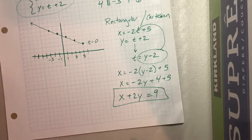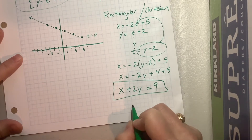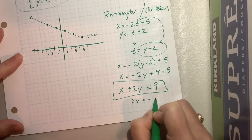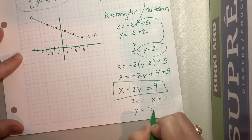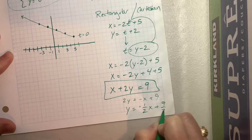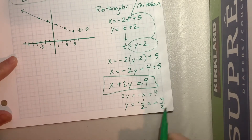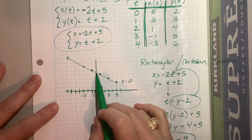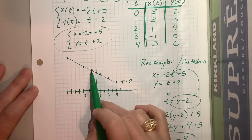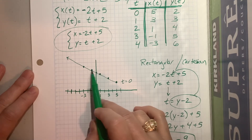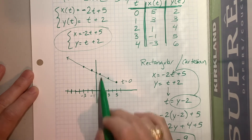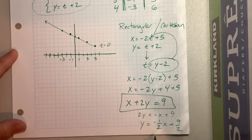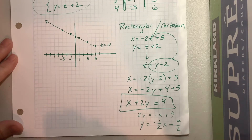That gives me x = negative 2y + 4 + 5, so x + 2y = 9. This is the standard form of the equation of a line: ax + by = c. You could also solve for y: 2y = negative x + 9, so y = negative one-half x + 9/2. The y-intercept is 9/2, which is 4 and a half, and the slope is negative one-half. Going over 2, down 1 gives a slope of negative one-half, which matches the graph we plotted.